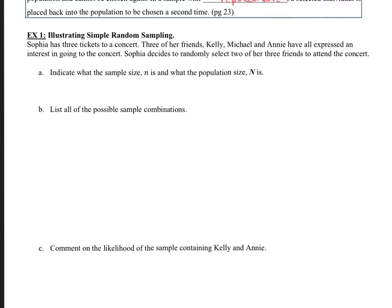This is illustrating simple random sampling. And once again, for simple random sampling, one of the main things we want to look at is the fact that they have an equally likely chance of occurring. Keep that in mind. So Sophia has three tickets to a concert. Three of her friends, Kelly, Michael, and Annie, all have expressed an interest in going to the concert. Sophia decides to randomly select two of her three friends to attend the concert. And that would be with her. So indicate what the sample size n is and what the population size N is. Once again, got to be careful with our capital and lowercase. So sample size.